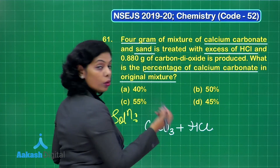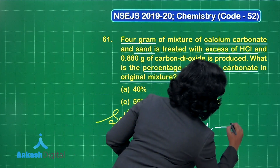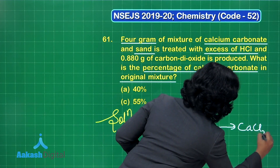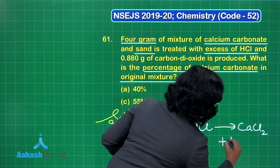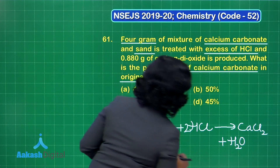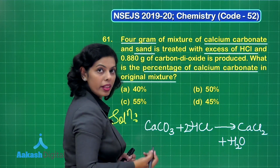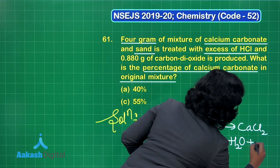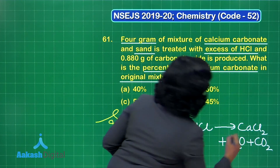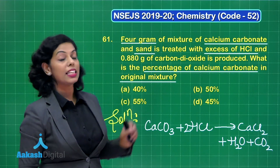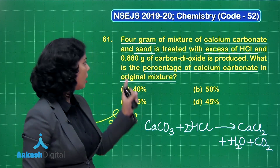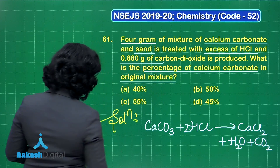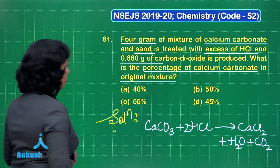When calcium carbonate and HCl react, there is formation of calcium chloride, along with water, and definitely when carbonate reacts with acid, there is formation of carbon dioxide. As per the question, the amount of carbon dioxide produced is 0.880 grams — this is the mass of CO₂ produced here.